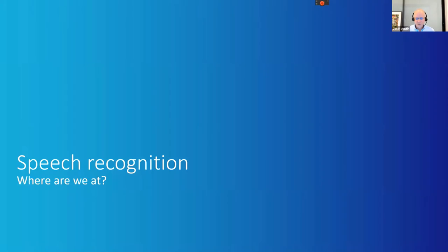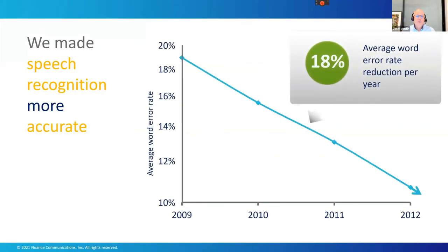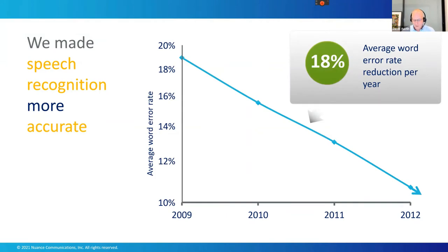Let's look at speech recognition more generally. We made speech recognition much more accurate. The figures from a few years ago show that the average error rate for Dragon decreased from close to 20% to under 10% in 2012. Since then, the rate has continued to improve and the number of errors is now very low indeed. In our material, we often claim up to 99% accuracy, and that is actually real — particularly with the last two versions of Dragon, versions 14 and 15, where the ease of use of the software became much higher.